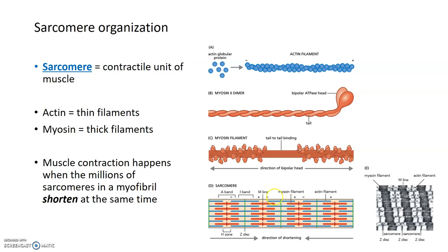A sarcomere extends from one Z-disc to the next Z-disc. The Z-discs, shown in green here, mark the delineation of one sarcomere. You can see the thick myosin filament darkly staining and the thin actin filament lightly staining, or the thick filament shown in red and the thin filaments in blue in this image.